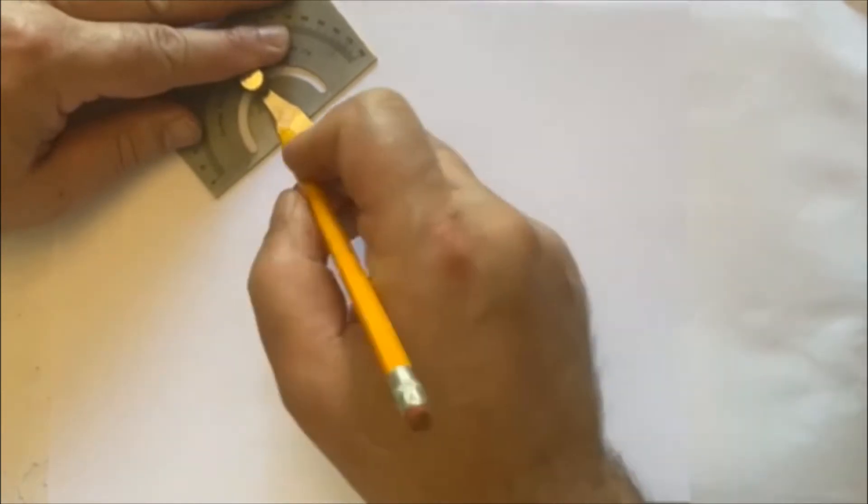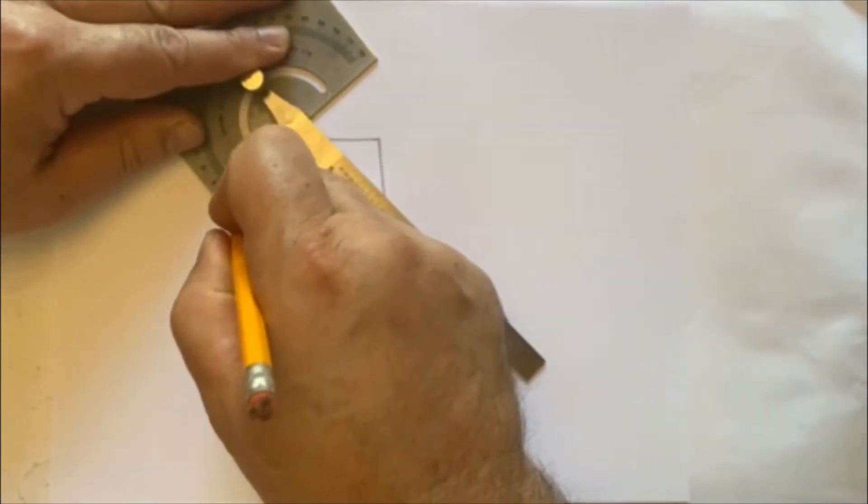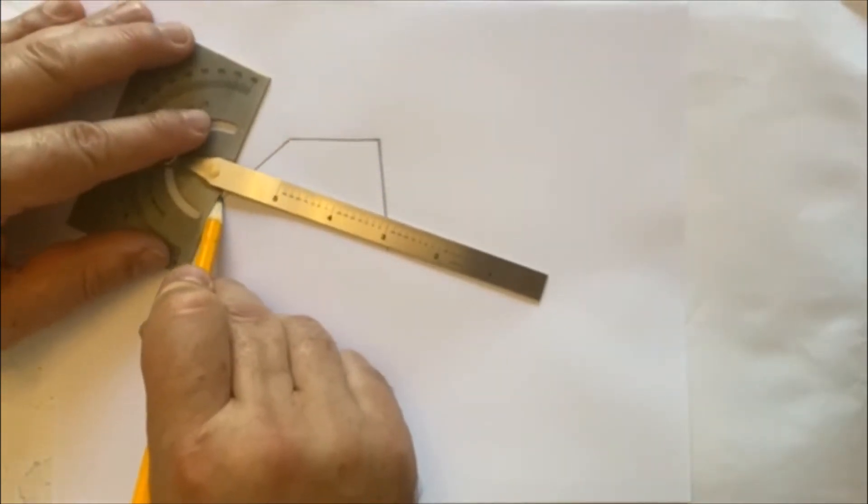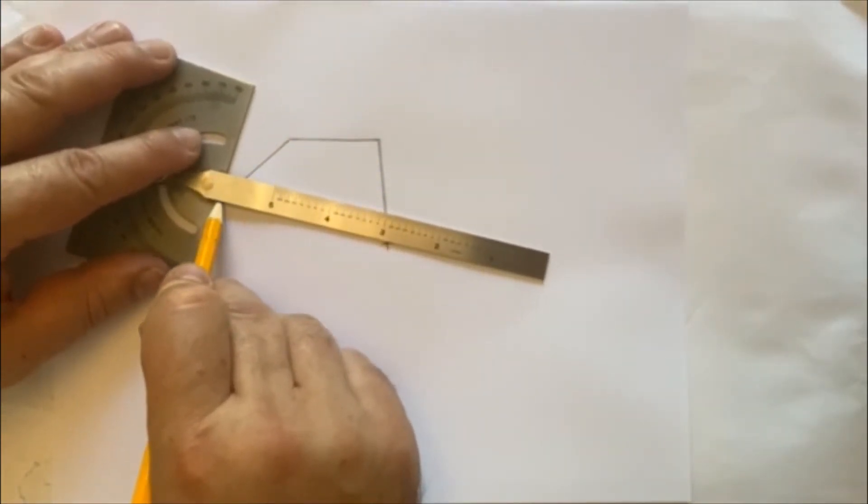You want the blade of the protractor on the center mark, and you're going to draw the first line with the stock of the protractor.